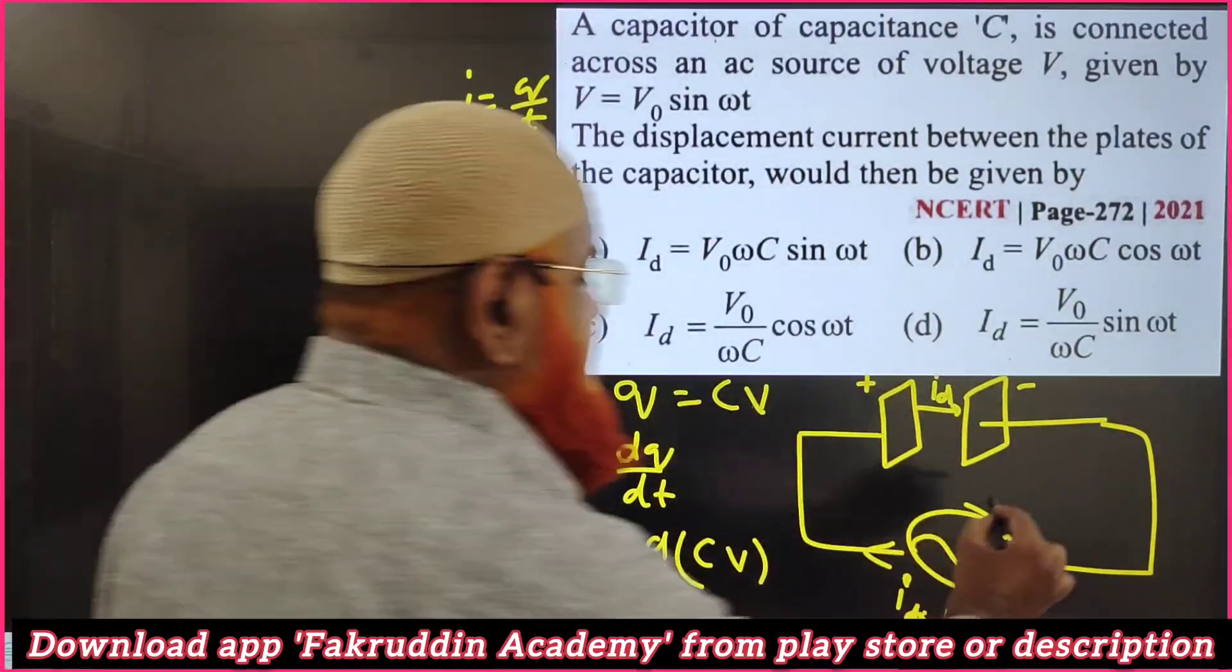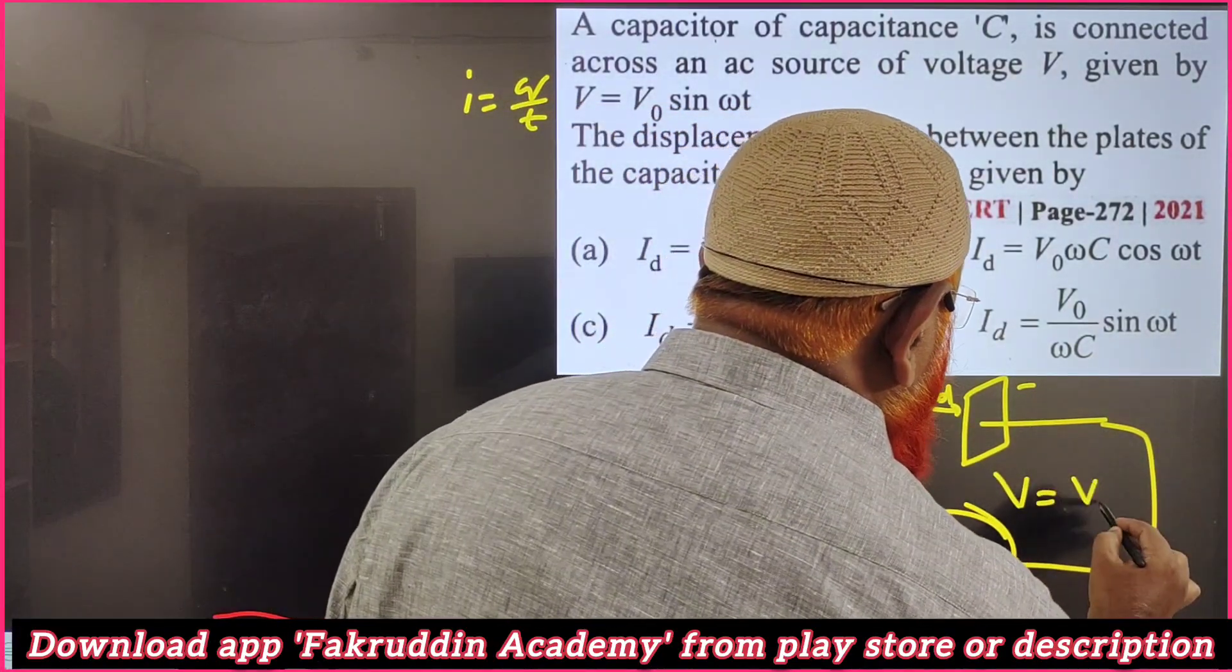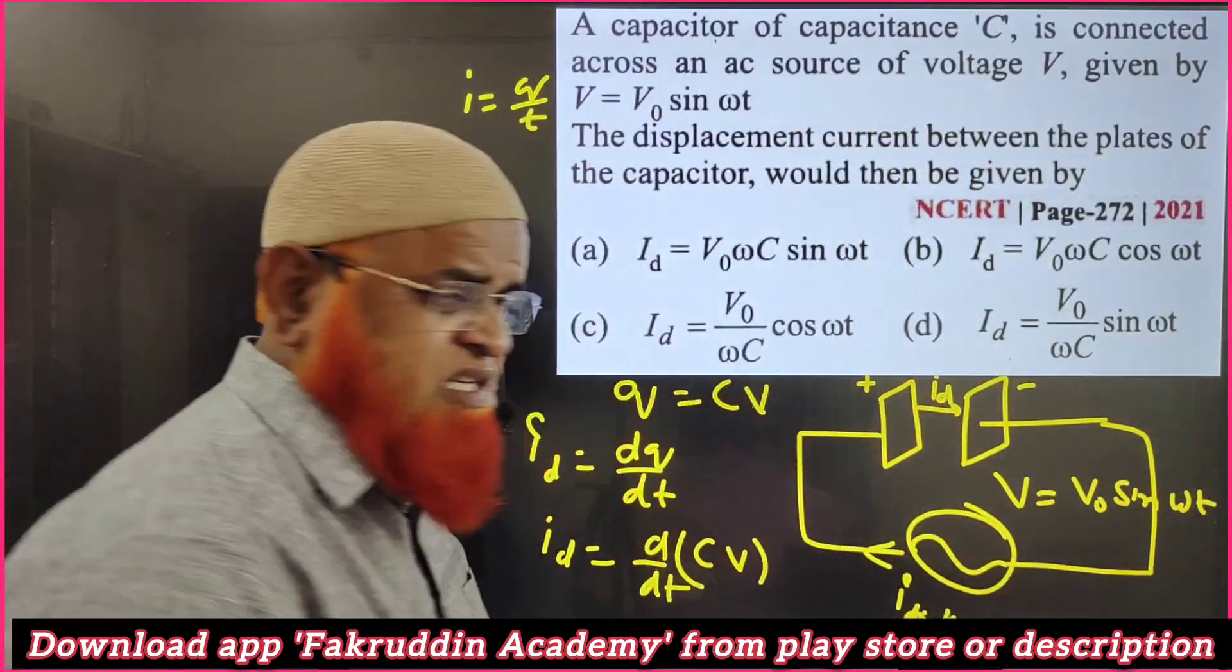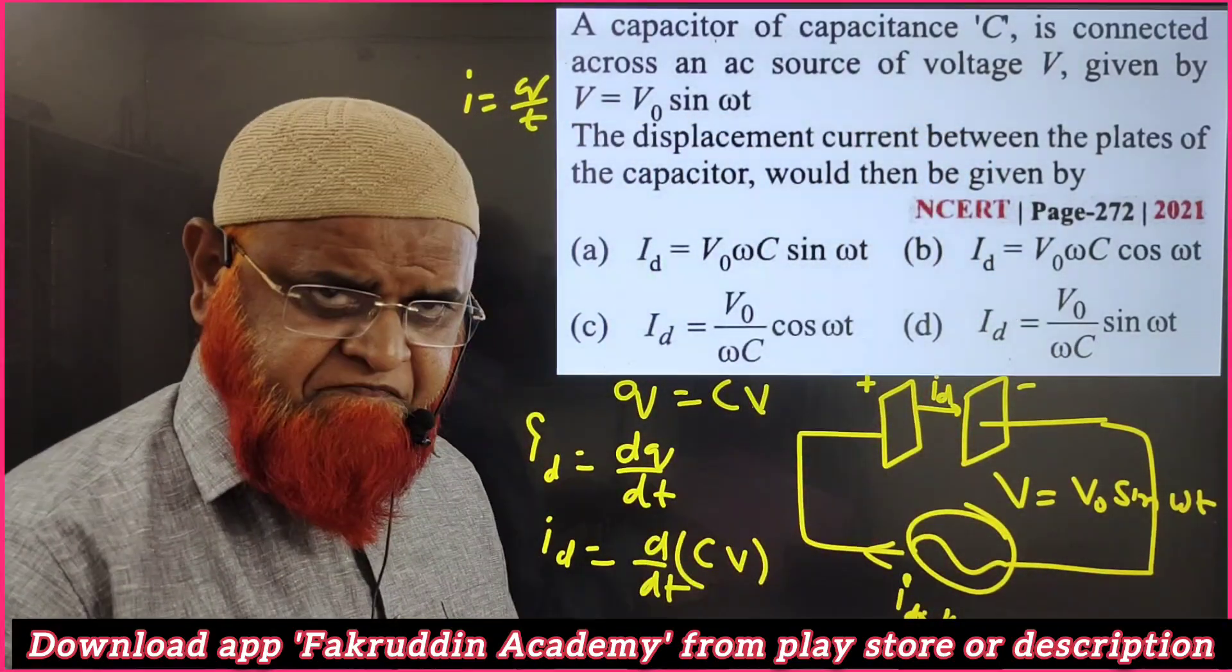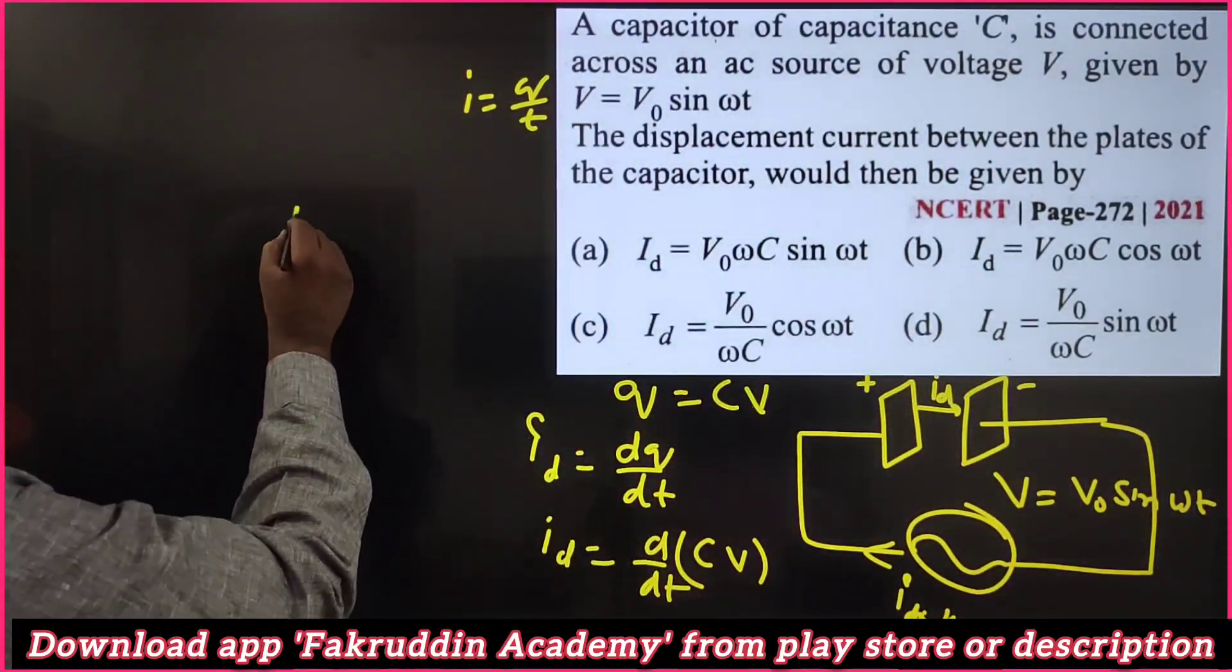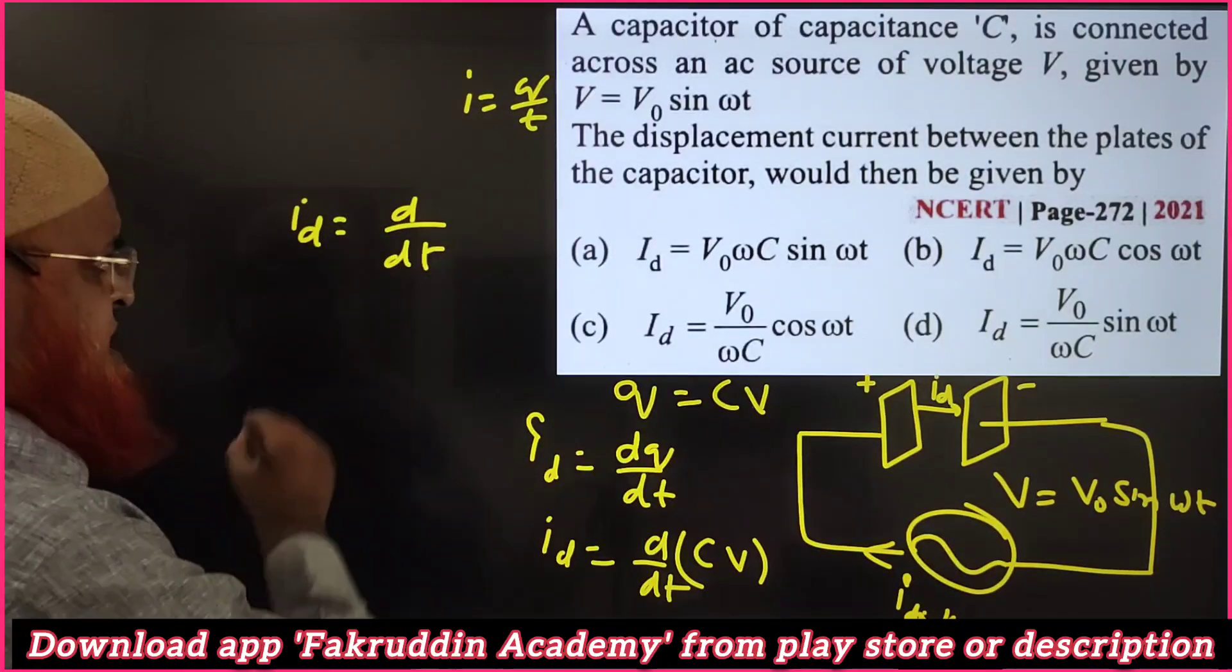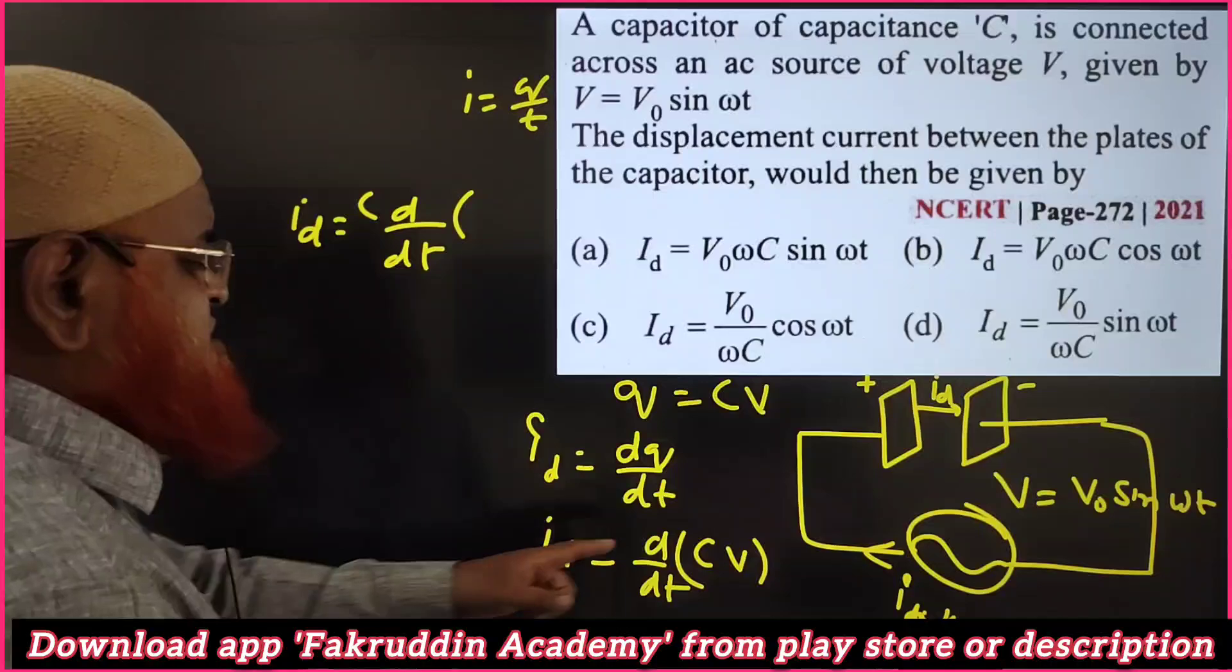If you consider the AC current, then what happens? It is represented with V = V₀ sin ωt because it is a sinusoidal wave. Then you write drift current is equal to d/dt of C V₀ sin ωt.